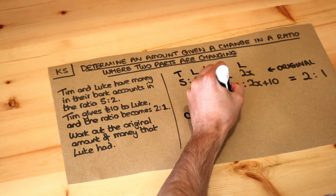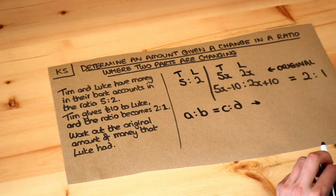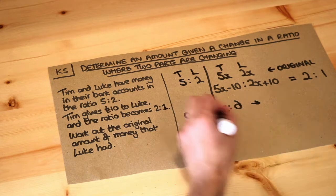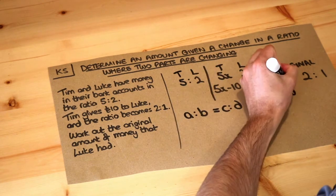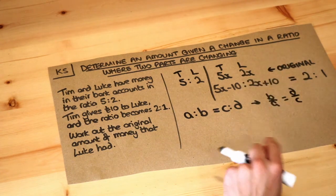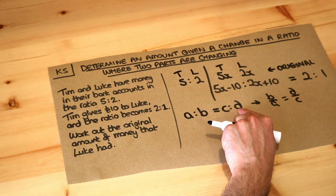If we have two ratios which are the same then you can turn this into an equation by doing B over A is equal to D over C. And what I'm basically saying is that the proportion difference between A and B is the same as the proportion difference between C and D.